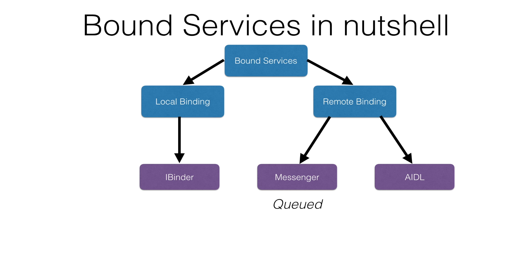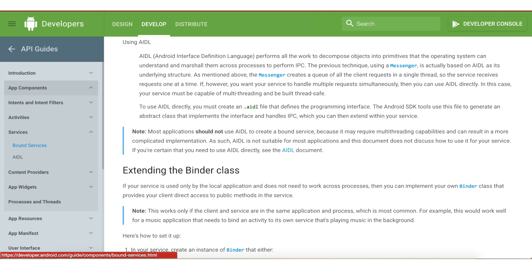Messenger is basically a queued concept wherein any component which wants to connect to a service will trigger a request, and these are queued — making it most suited for non-multi-threaded scenarios. AIDL is a bit more complex and is more suited for a multi-threaded environment. Android documentation clearly states that most applications should not use AIDL, as it is not suitable for most applications.